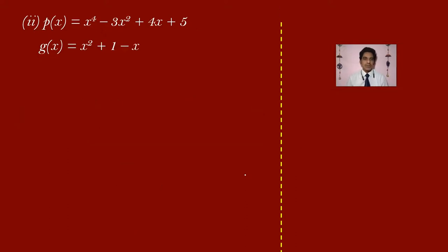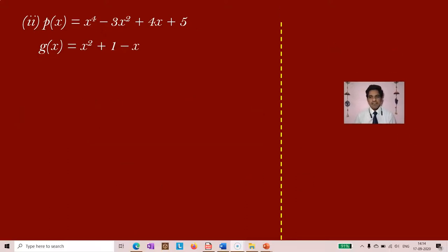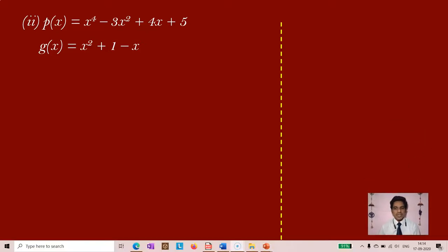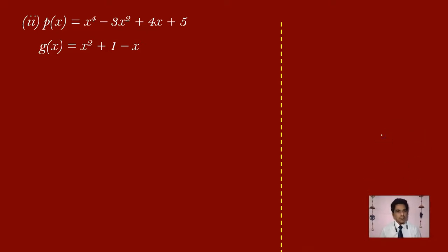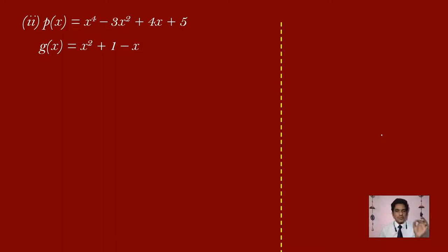Let us move on to the second problem. In the second problem, P of x is x power 4 minus 3x square plus 4x plus 5 — the degree of this polynomial is 4. The divisor G of x is x square plus 1 minus x. We have to check two things: the polynomial should be in standard form, and if any terms are missing their coefficients, we write 0 for those terms.